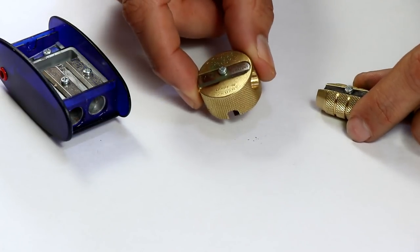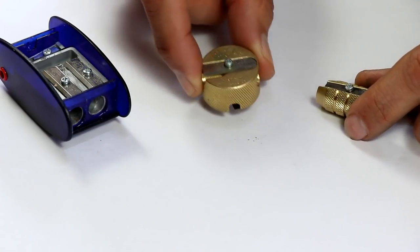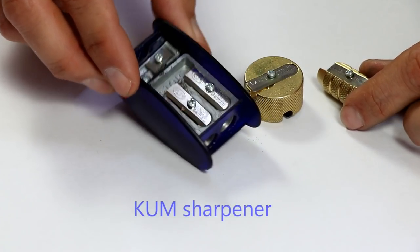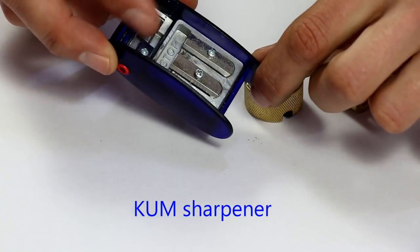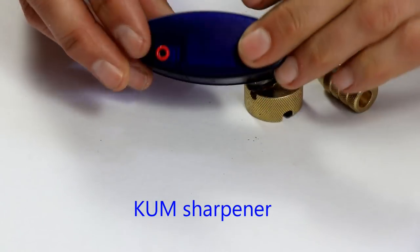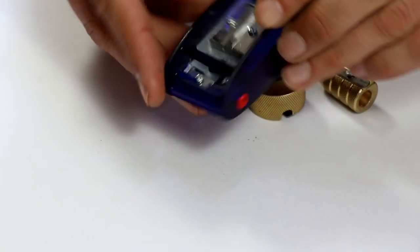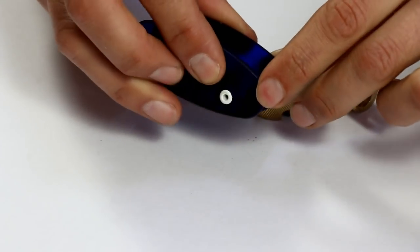This one you may have seen on a previous video of mine is a KUM sharpener. Nice and sharp, really great for graphite, and you also got little areas on the sides as well so you can do those technical pens with the tiny leads in them. So very versatile.